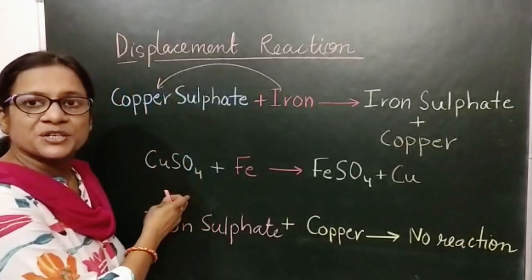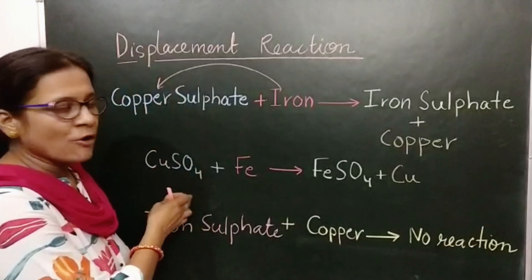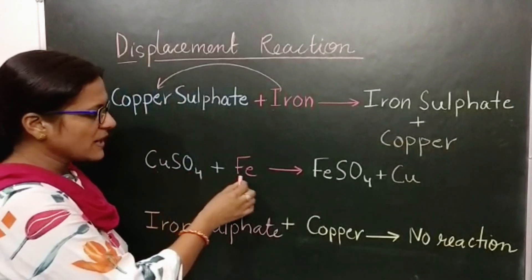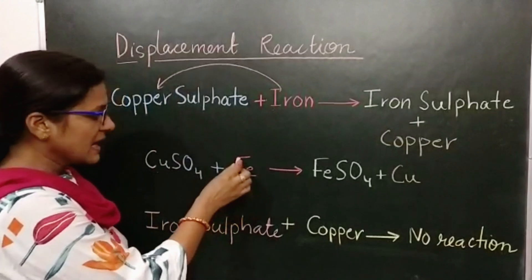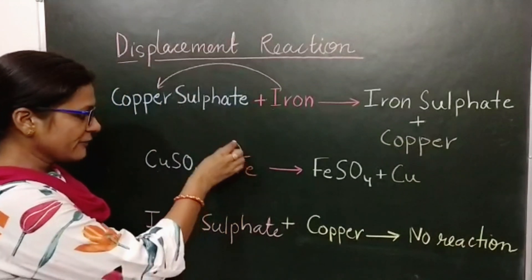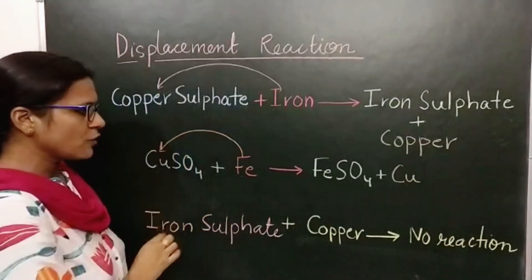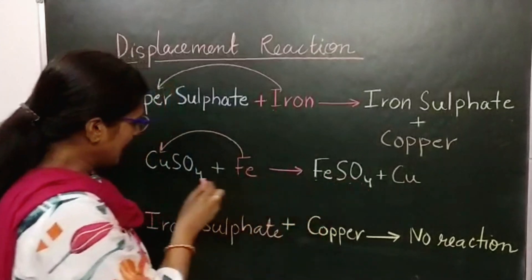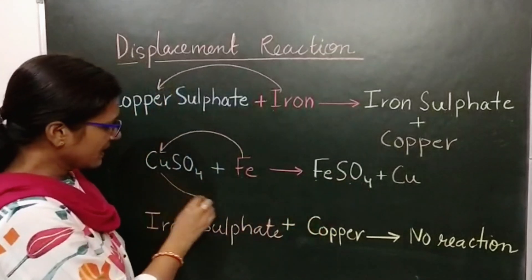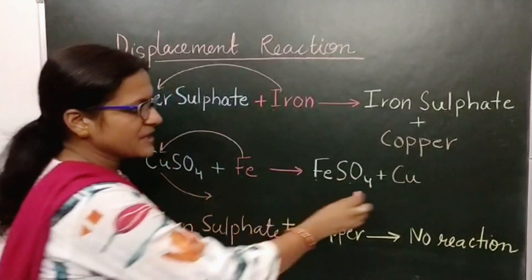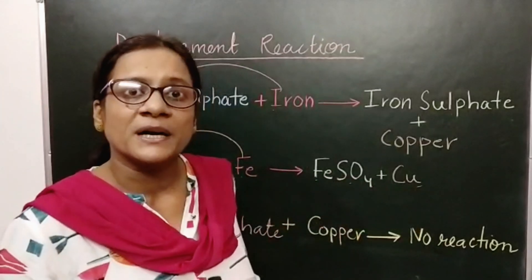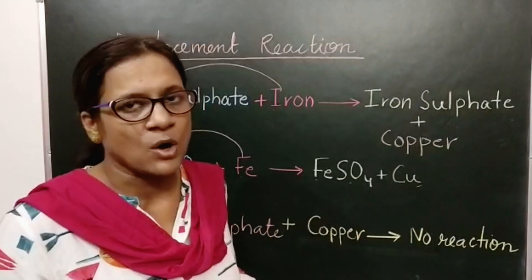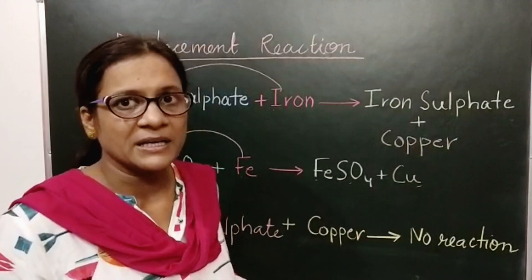When we write this equation in symbolic form: copper sulphate, CuSO4, plus Fe which is iron — here this Fe will take the place of copper and forms FeSO4, and the copper is separated and deposited on the iron fillings or on the iron nails.